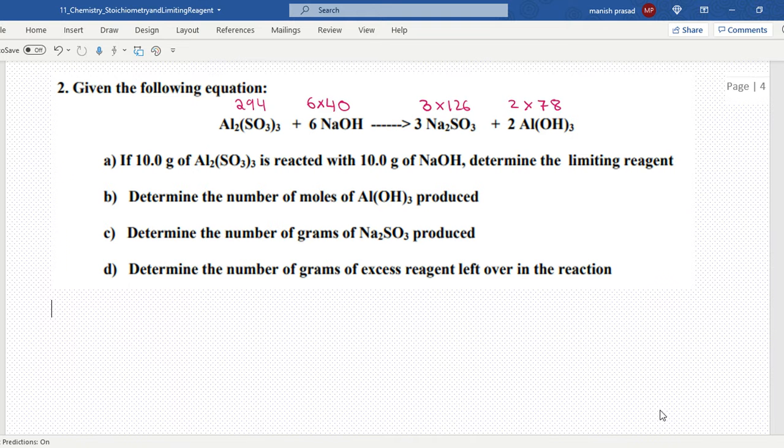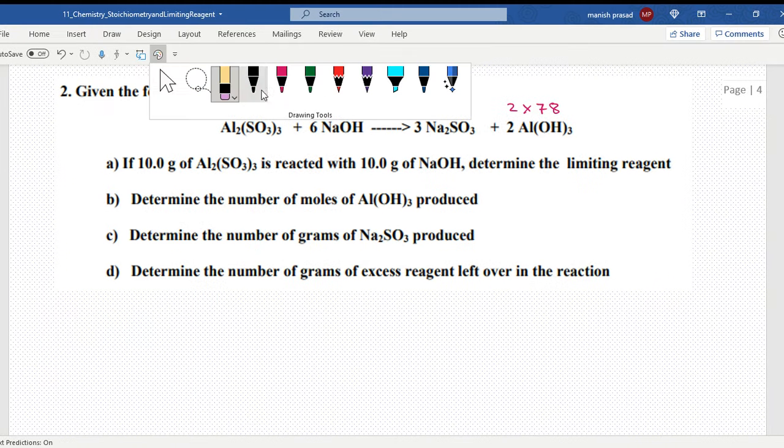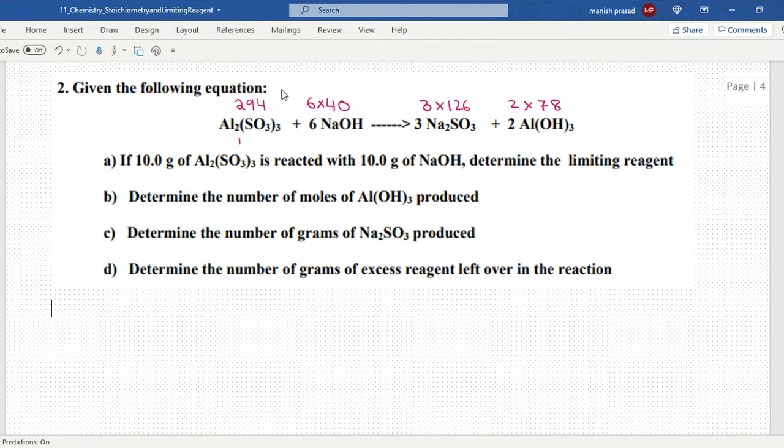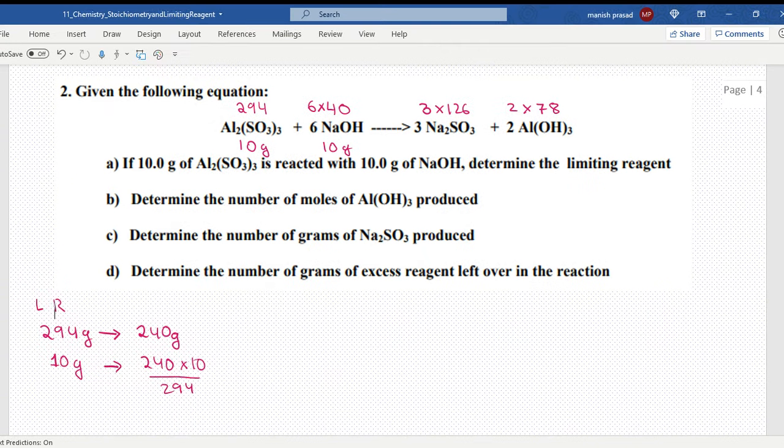After the molar masses, let's see what is given to us: 10 grams of Al₂(SO₃)₃ is reacted with 10 grams of NaOH. Determine the limiting reagent. 294 grams of aluminum sulfite requires 240 grams of NaOH. So 10 grams of aluminum sulfite would require 240 into 10 divided by 294.